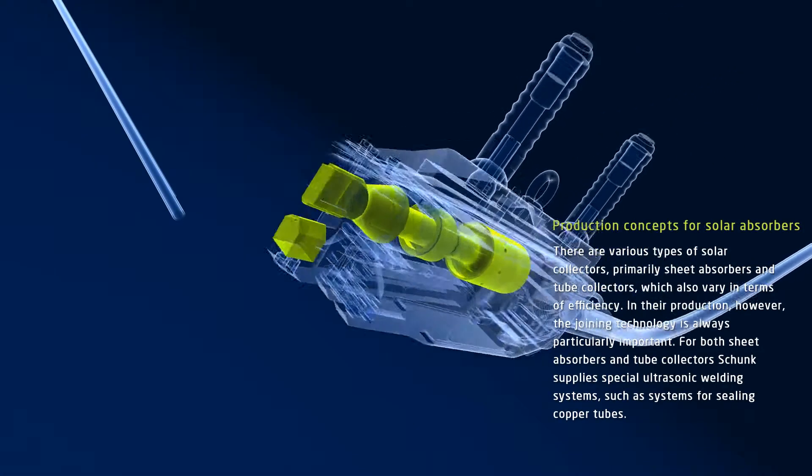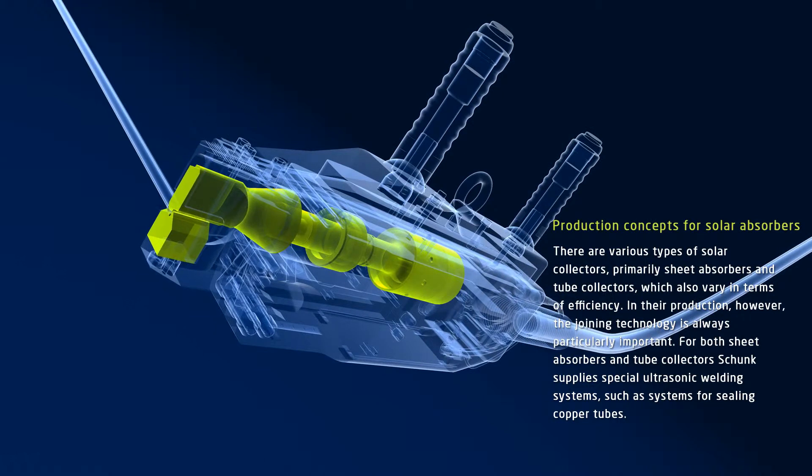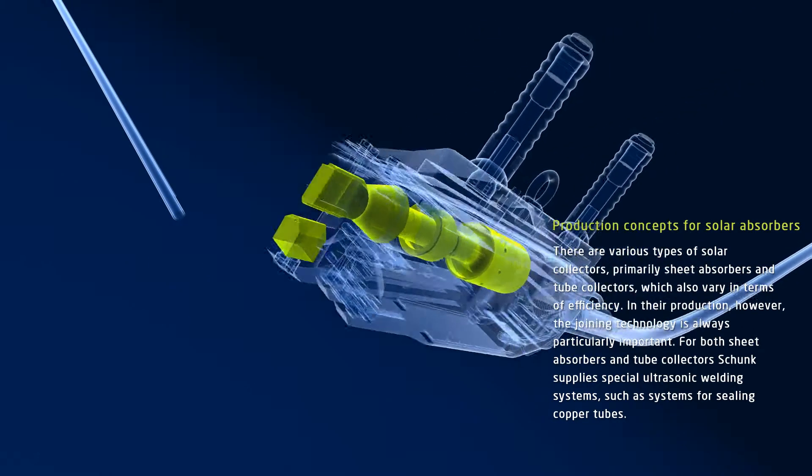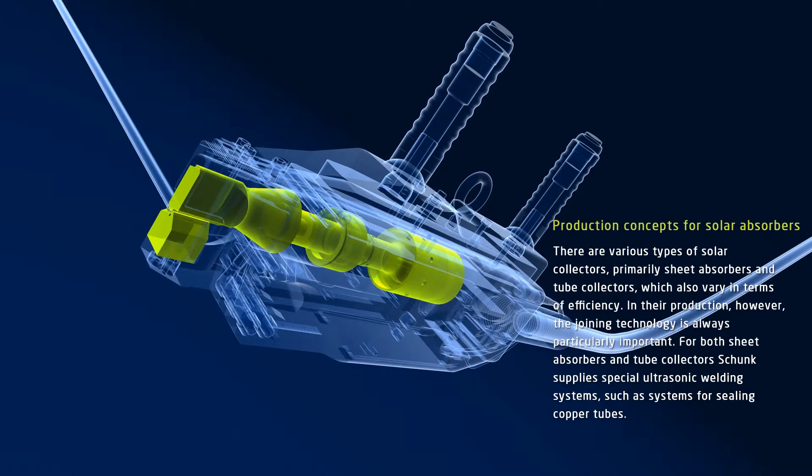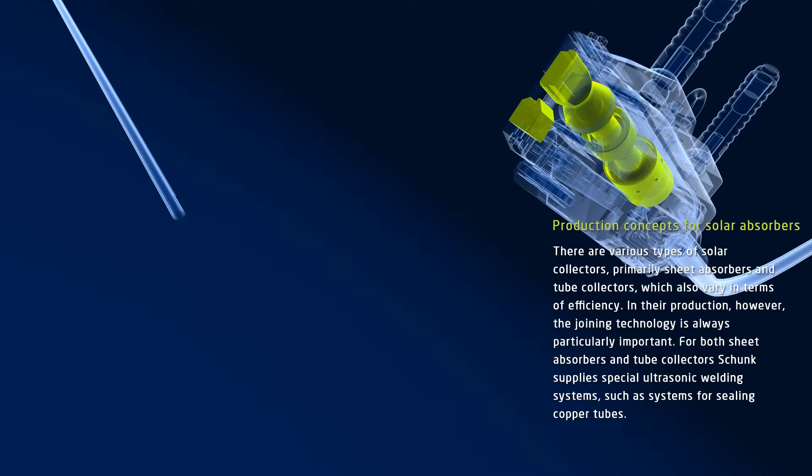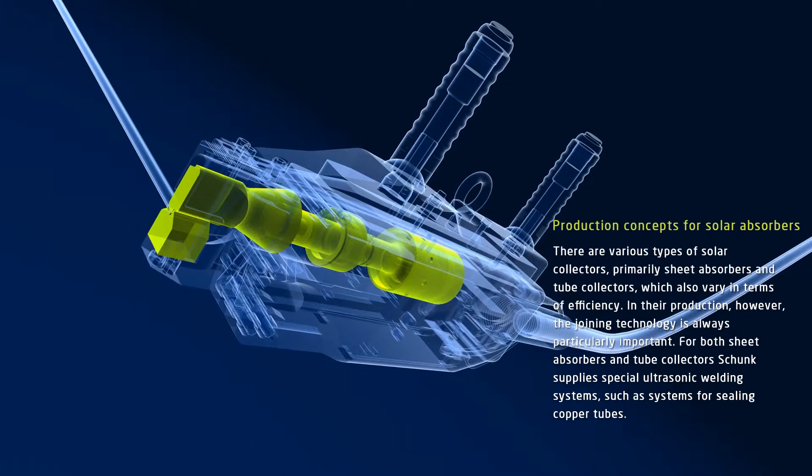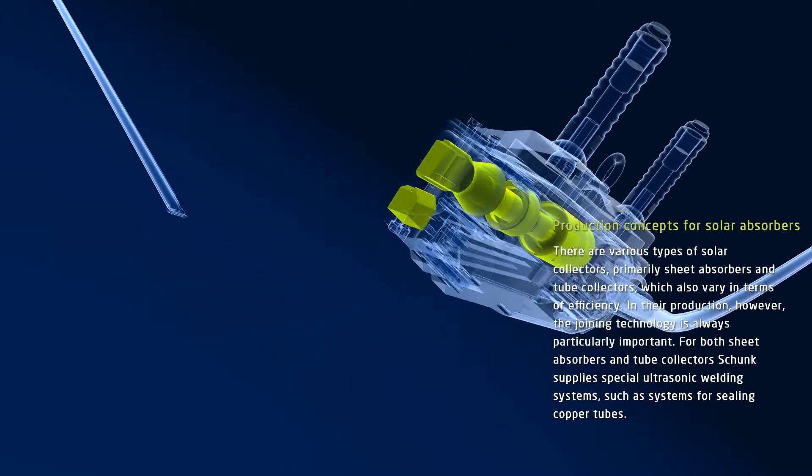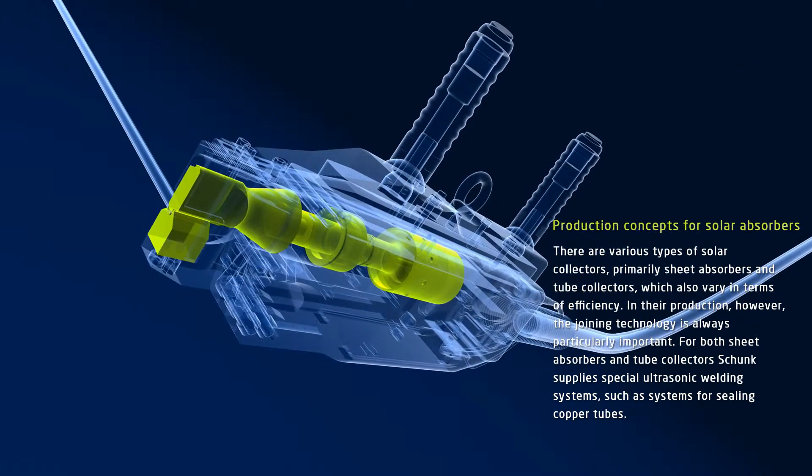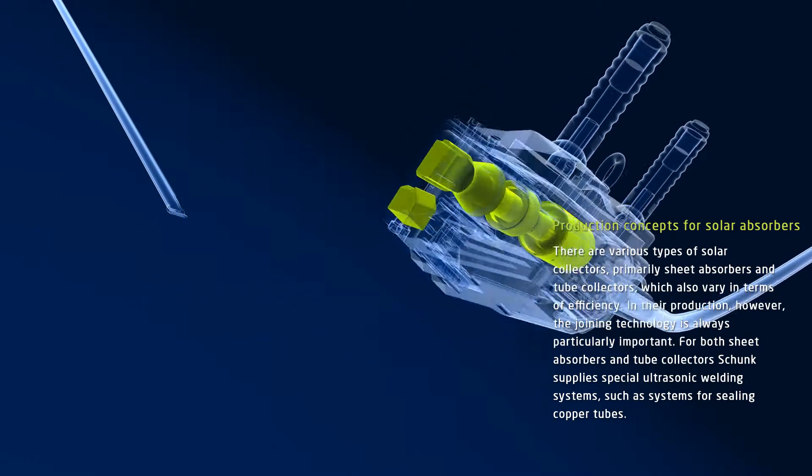Depending on the application, the appearance of solar collectors can vary widely. For example, there are sheet absorbers and tube collectors, which also vary in terms of efficiency. Regardless of their appearance, however, in the production of solar collectors, joining technology is especially important, so that efficiency remains high.